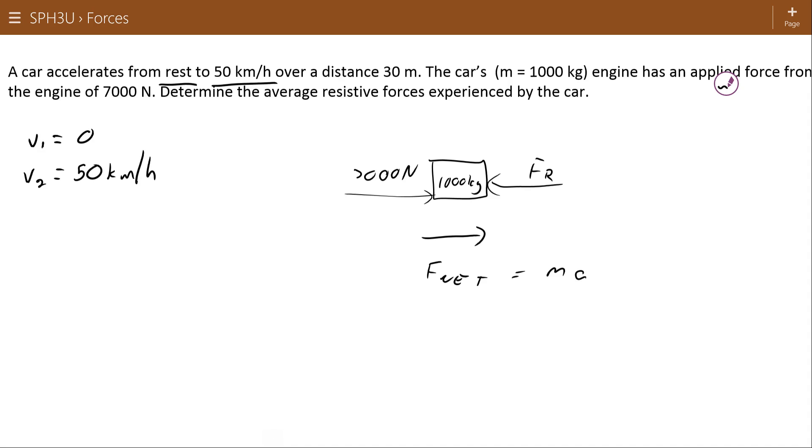We need to be careful here because we need to use standard units. So 50 kilometers per hour cannot be left like that. It needs to be converted into 13.9 meters per second over distance or displacement of 30 meters.